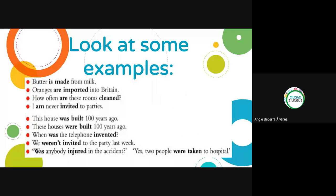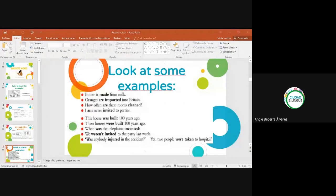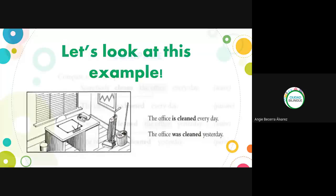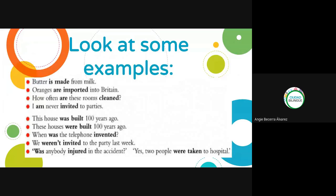So here we have some examples we already saw yesterday; we are going to skip most of them. The first one says: 'Butter is made from milk' — la mantequilla proviene de la leche. And in past simple: 'This house was built 100 years ago' — esta casa fue construida hace 100 años. In the passive voice the author of the action is omitted; it doesn't say 'Pablo built this house 100 years ago.'